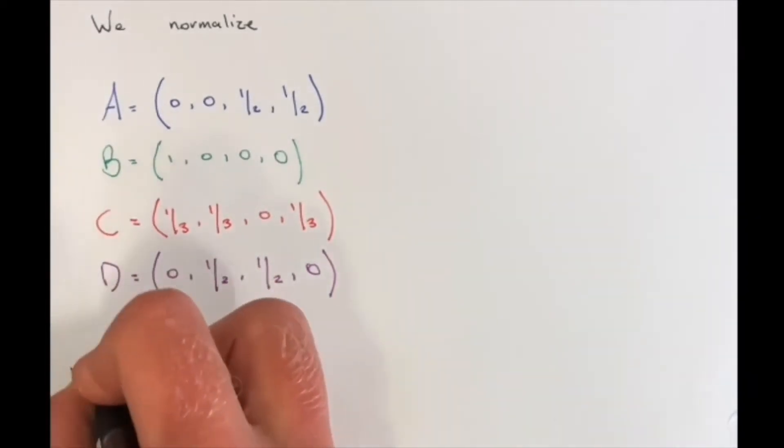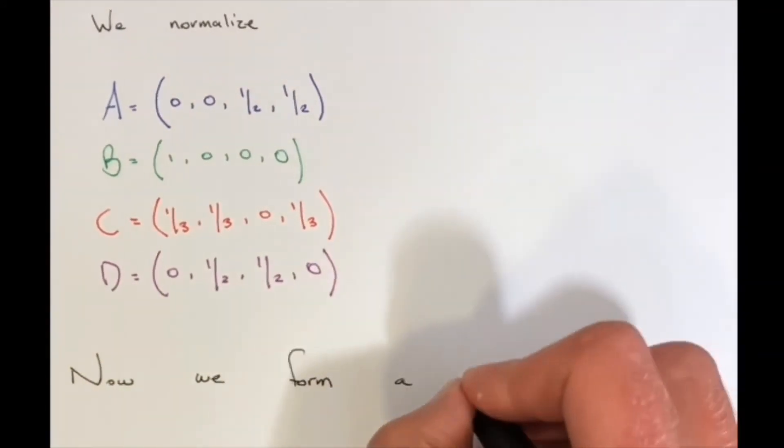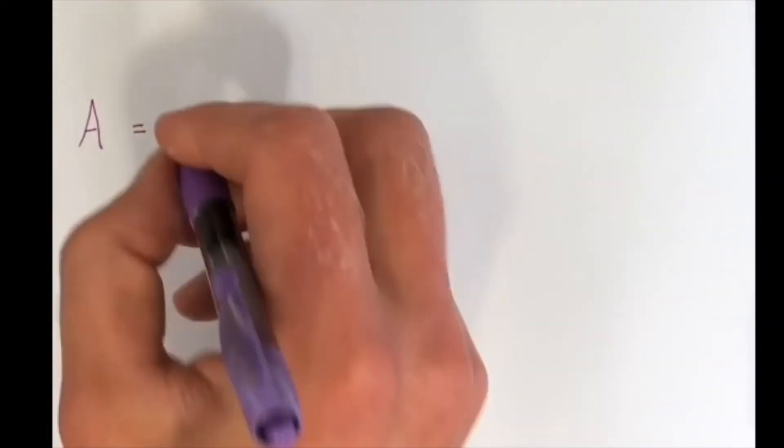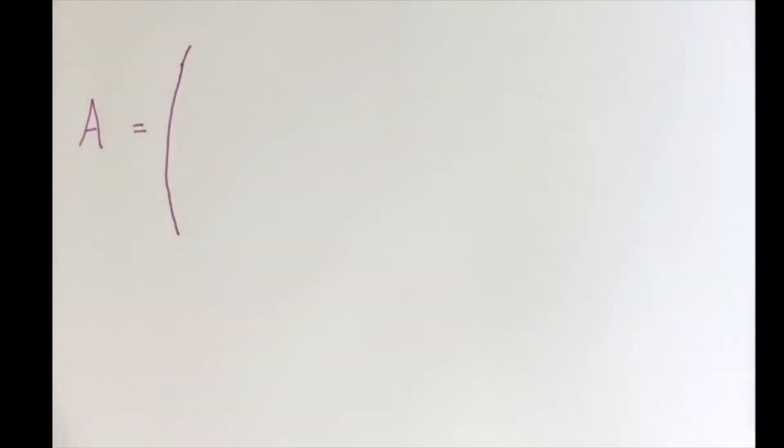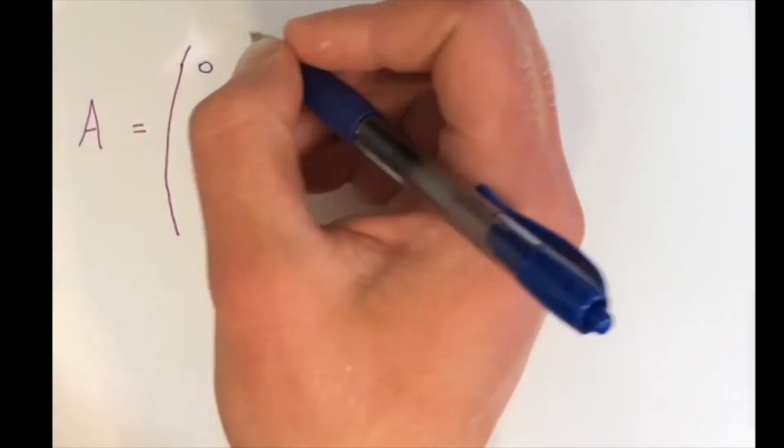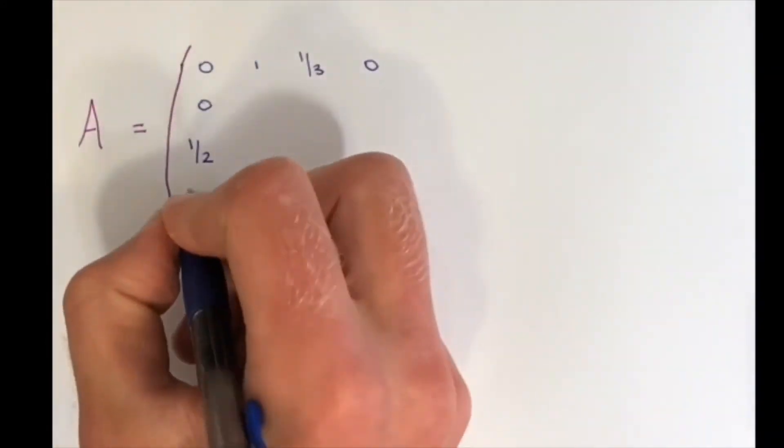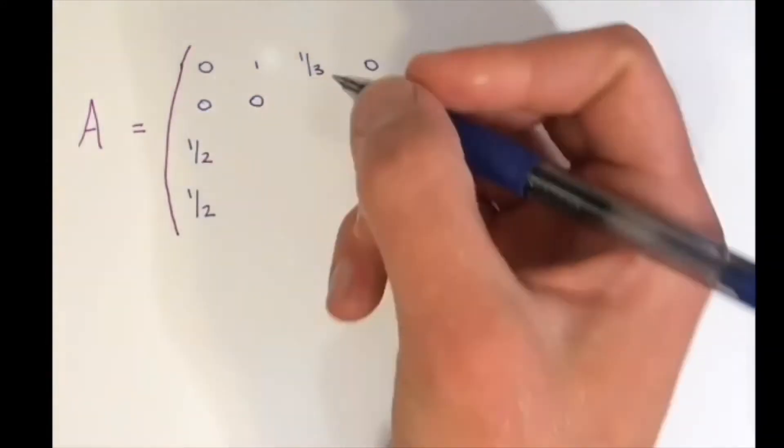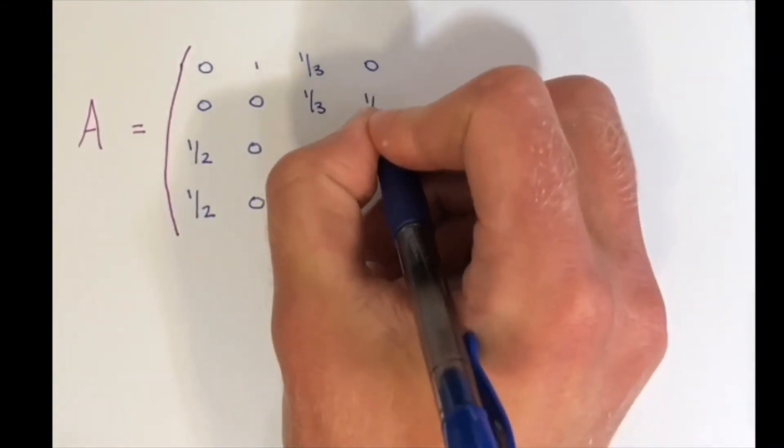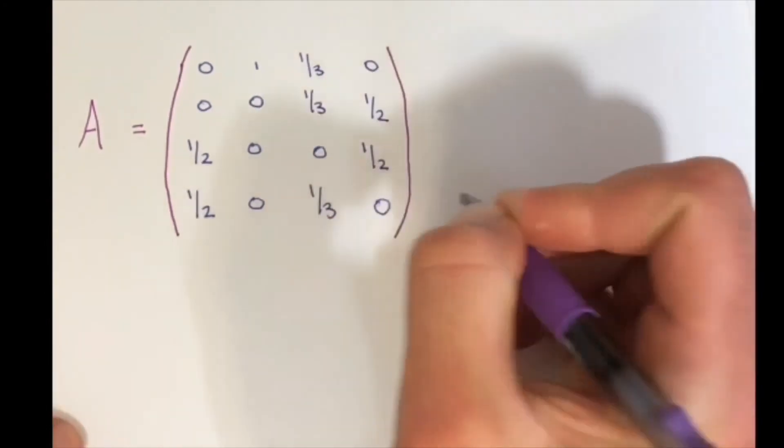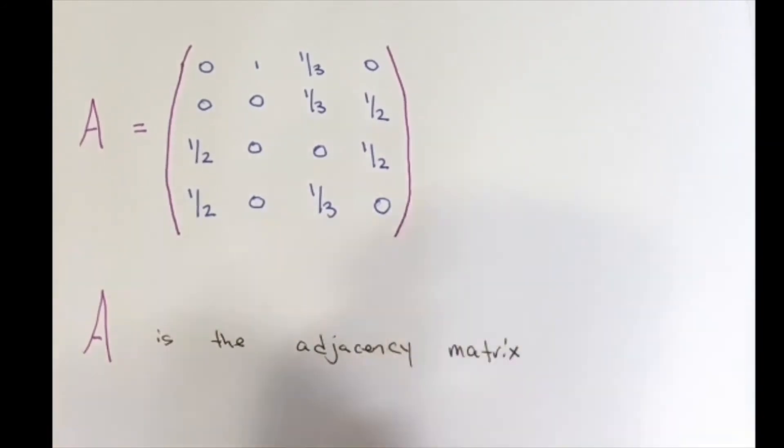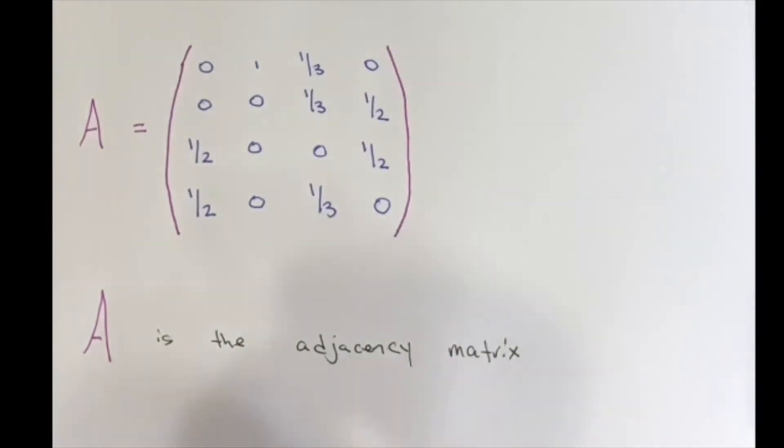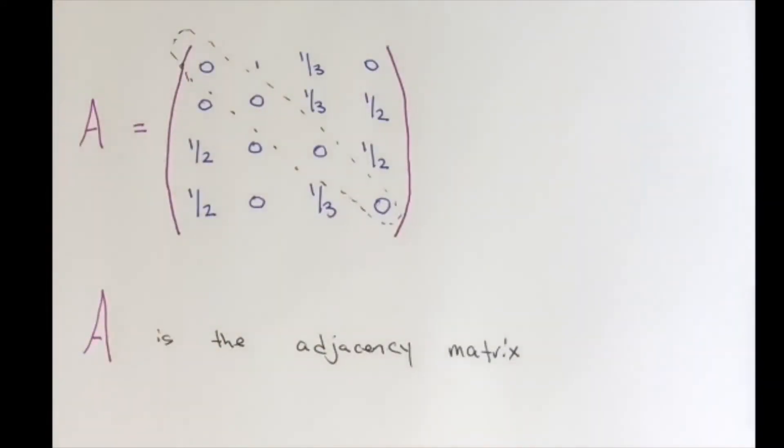Now we can use our vectors to form a matrix. To form this matrix, each row is one of our vectors. So row one is vector A, row two is B, row three is C, and row four is D. A is our adjacency matrix after it's been normalized. Our adjacency matrix would have all zeros and ones in the entry. But we see that it's still self-similar since we have all zeros in the diagonal.